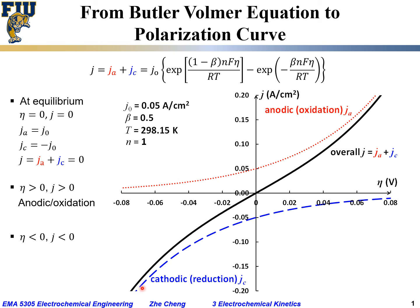On the other side, with negative overpotential, the overall current density is negative. What happens is the cathodic current density has a larger and larger absolute value compared to the anodic, and since cathodic is negative, the net current is negative — meaning the reaction proceeds through the reduction process. So: positive η gives anodic or oxidation; negative η gives cathodic or reduction.